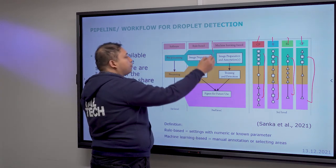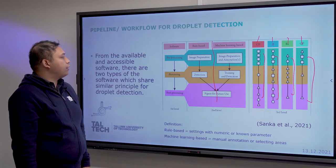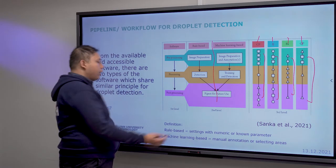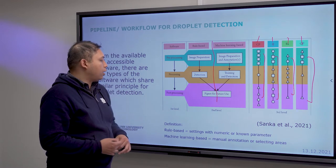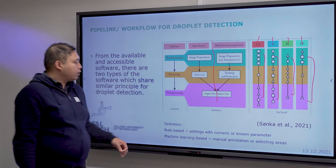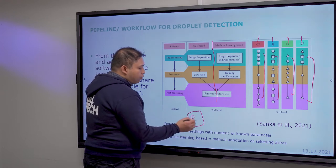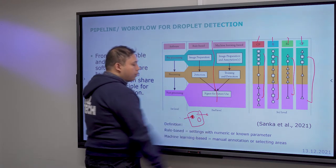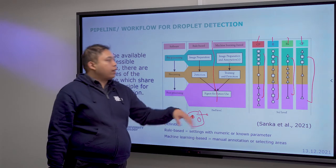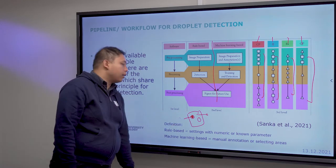We classify these pipelines into rule-based and machine learning-based approaches. Rule-based uses numeric parameters like threshold and size. In machine learning, you annotate regions — for instance marking droplets and background — and the classifier finds features in the image to help with classification.